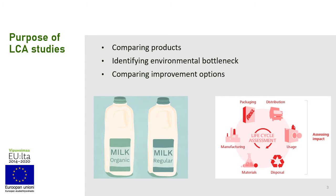There are different purposes of LCA studies. First, we can use it to compare products. For example, we have regular milk or organic milk and then we wonder which one of these two products is actually more environmentally friendly. We can also identify an environmental bottleneck, which we call an environmental hotspot. So let's say we have a product life cycle starting from raw material extraction, then production, transportation, consumption, and end of life, and using life cycle assessment we can tell which part of the supply chain causes the highest environmental impact.